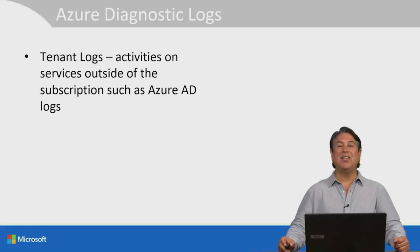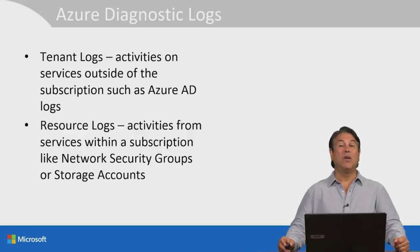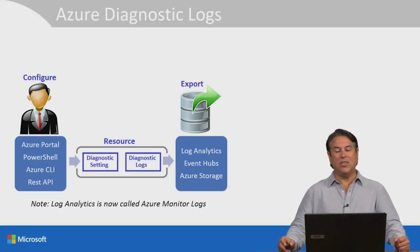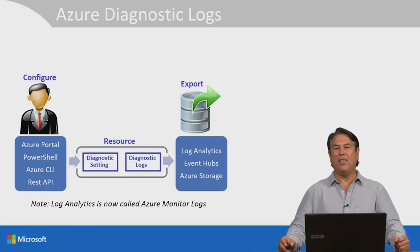Tenant logs work on activities on services outside of the subscription, such as Azure Active Directory logs. Resource logs work on activities from services within a subscription, like network security groups or storage accounts. Tenant diagnostic logs are configured with a tenant diagnostic setting, and resource diagnostic logs use resource diagnostic settings. They can be configured in the Azure portal, in PowerShell, in CLI, or using the REST API. On the exam, keep in mind that the term 'log analytics' will probably be called 'Azure Monitor Logs.'